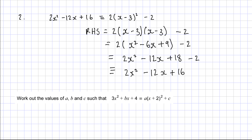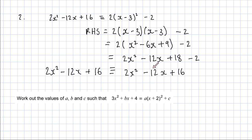So writing it as an identity: 2x squared minus 12x plus 16. The coefficient of x squared — the 2 in front — is always going to be the same on both sides. This minus 12 is always going to match the minus 12, and this 16 is always going to be 16. The coefficient of x squared, the coefficient of x, and the constant all need to be the same on both sides.